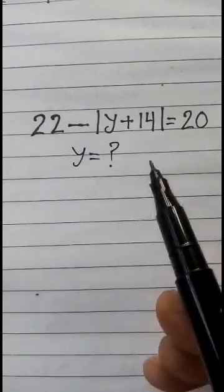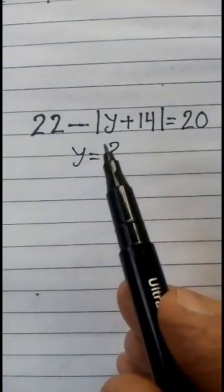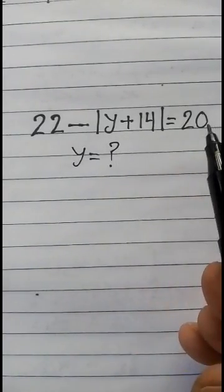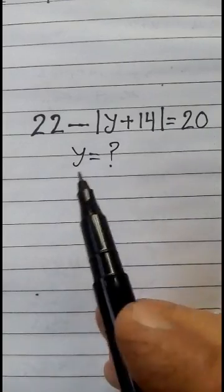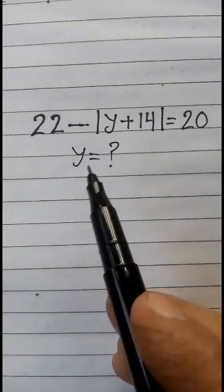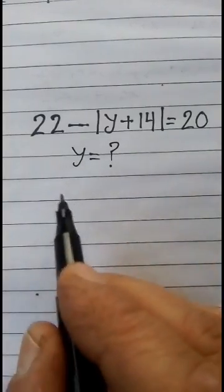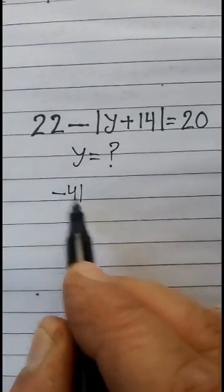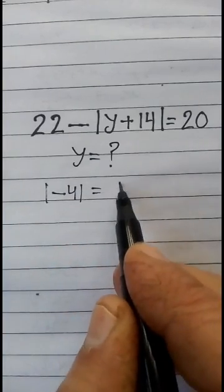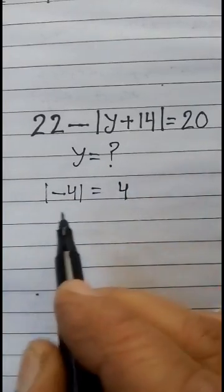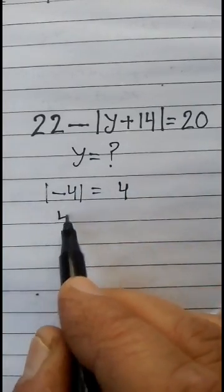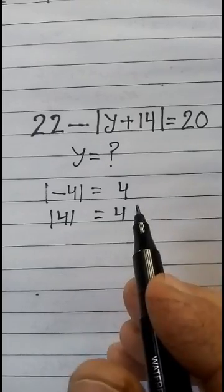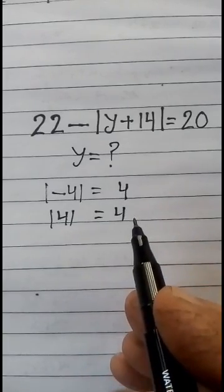We have the problem: 22 minus mod of y plus 14 is equal to 20. We have to find out the value of y. As we know, mod of minus 4 is equal to 4, and mod of 4 is also 4. Let's start.